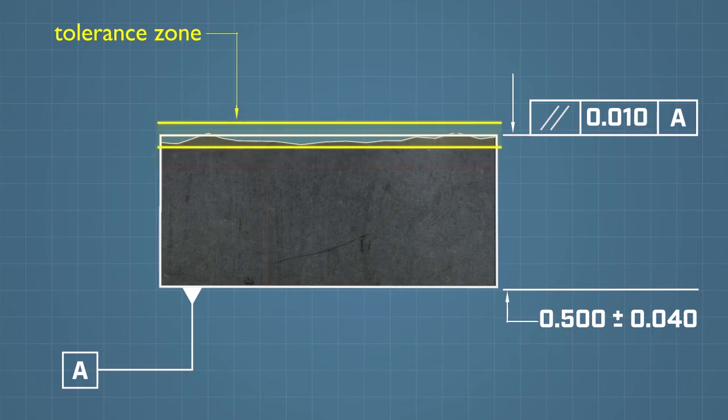Because all points on the surface are within the planar tolerance zone, the flatness of the surface is also controlled.